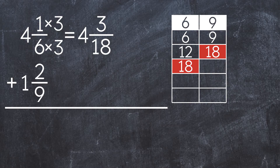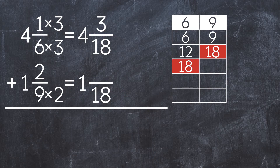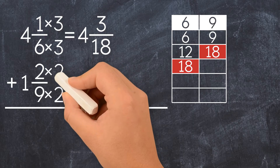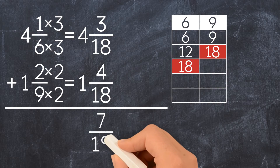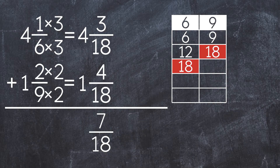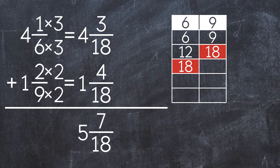Now let's rename the second mixed number. To get 18 in the denominator, we multiply 9 times 2. We also multiply the numerator by 2 to get 1 and 4 over 18. Now we can add. First, we add the fractions to get 7 over 18. Then we add the whole numbers to get 5. So the final answer is 5 and 7 eighteenths.